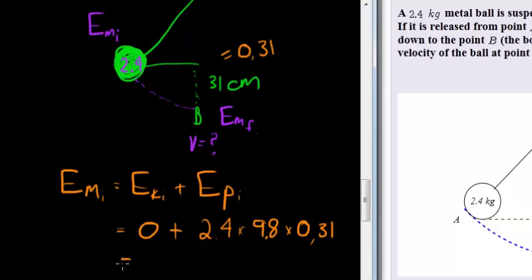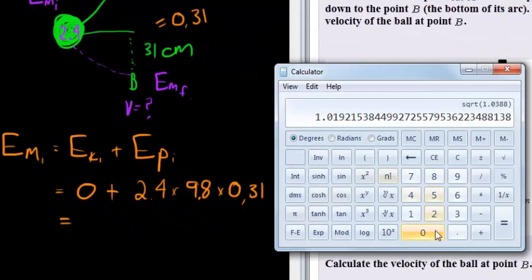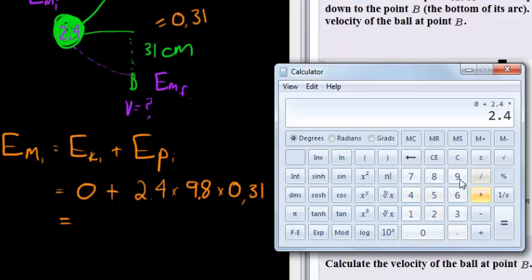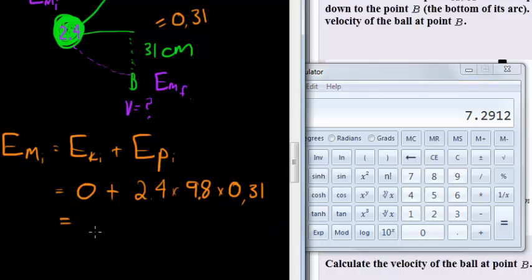And that means our total kinetic energy at the top is, let's calculate: 2.4 times 9.8 times 0.31 equals 7.2912, that's in joules.